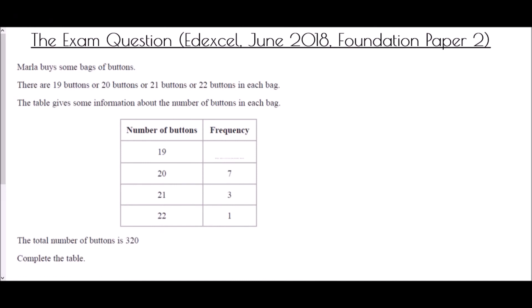To finish, we have an exam question from the Edexcel paper in June 2018 Foundation Paper 2 — a calculator question. Marla buys some bags of buttons; there are 19, 20, 21, or 22 buttons in each bag. The table gives information about the number of buttons in each bag, and the total number of buttons is 320. Complete the table. This question doesn't mention averages, but it uses the same ideas we've been looking at.